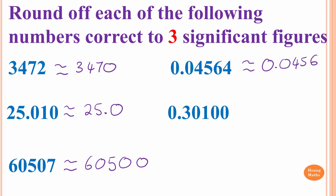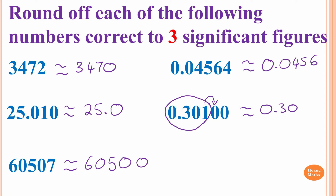Next one. Zero at the end of a decimal number is significant. Both the first and last digits are significant, and everything in between is also significant. We count 1, 2, 3, 4, 5 — five significant figures. We want 3. The digit after the third significant figure is 1 — less than 5, so we round down. The answer is 0.301.